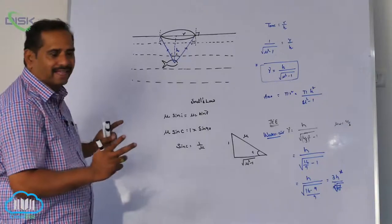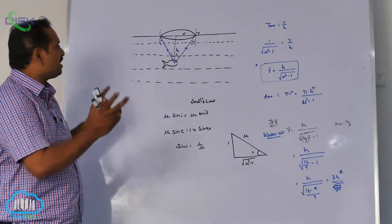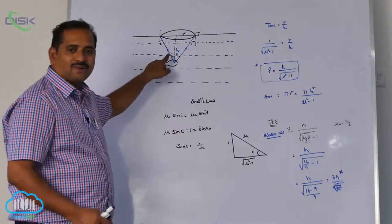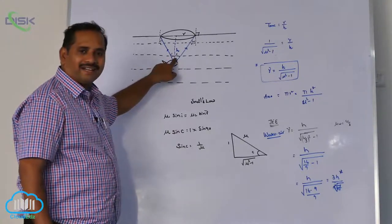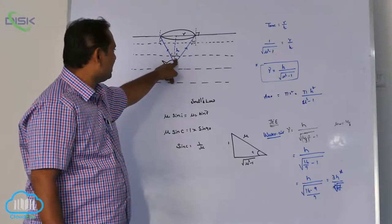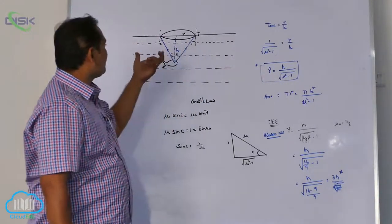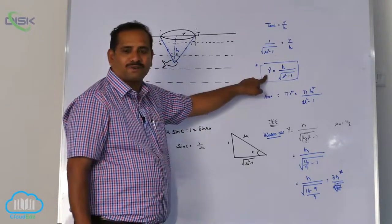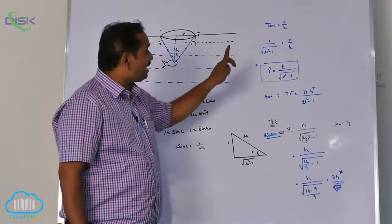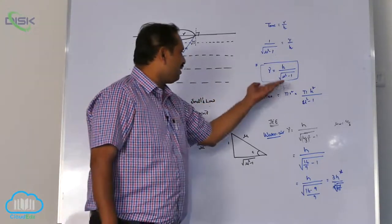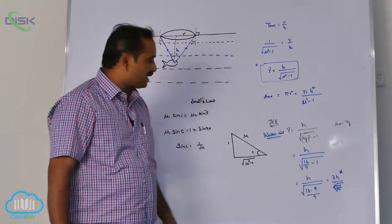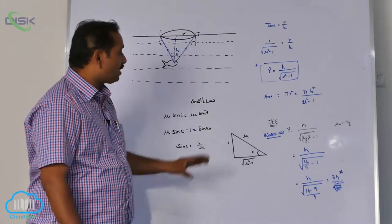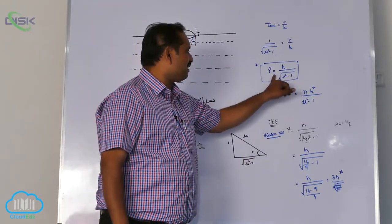This is about critical angle. Critical angle condition observed in the case of fish. What they can ask you: important bits are this. Conclusion of this topic: apex angle is 2C. They can ask you apex angle, up to what visualized angle it can observe: 2C. Radius of the cone: H by root mu square minus 1. Area of the cone: pi R square. For water and air: 3H by root 7, but the generalized formula is this only.